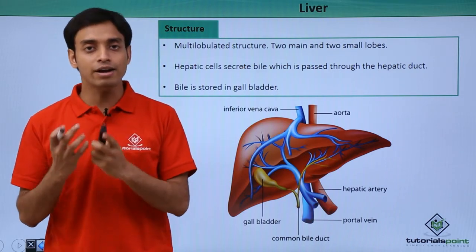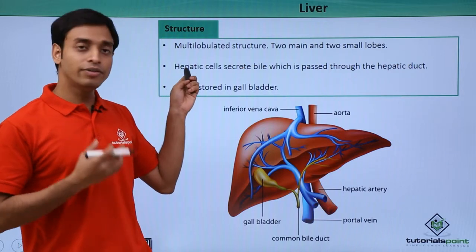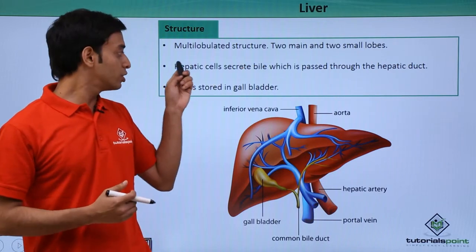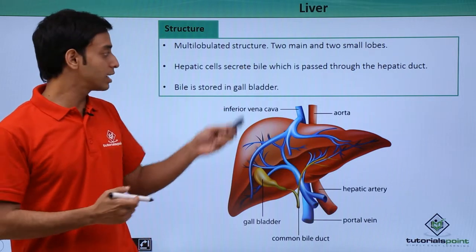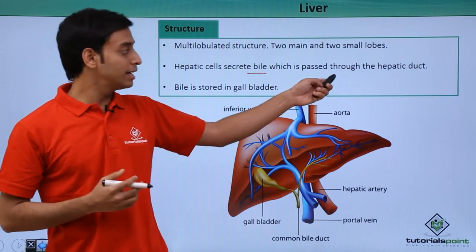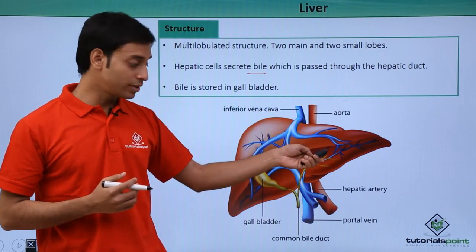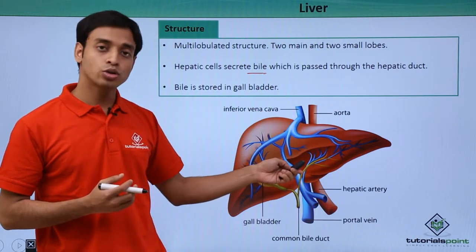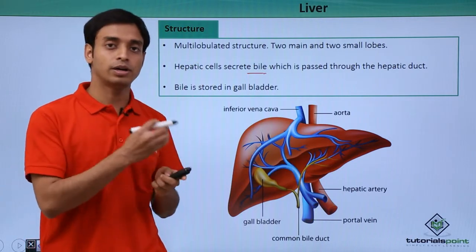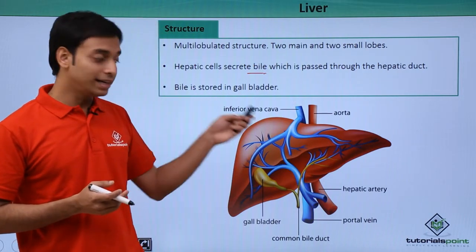These lobes are the structural and functional units of the liver. The liver is made up of hepatic cells — the cells which make up the liver. These hepatic cells secrete bile, which is passed into the hepatic duct. The secretions of the hepatic cells are transferred into the hepatic duct as bile.